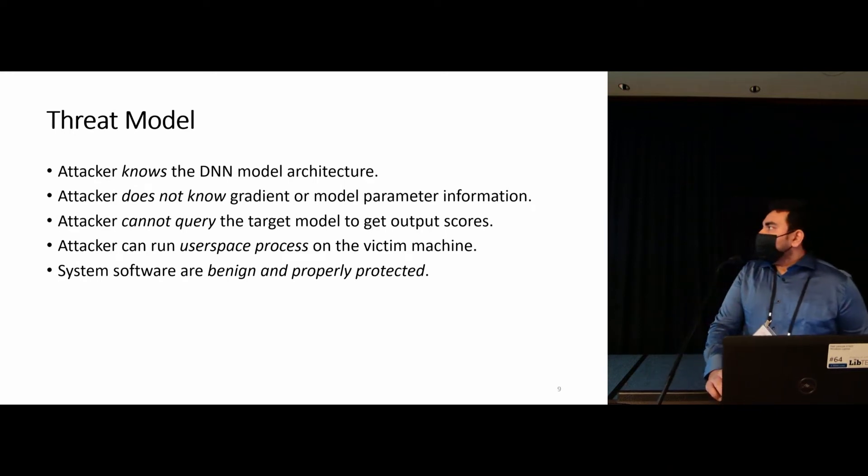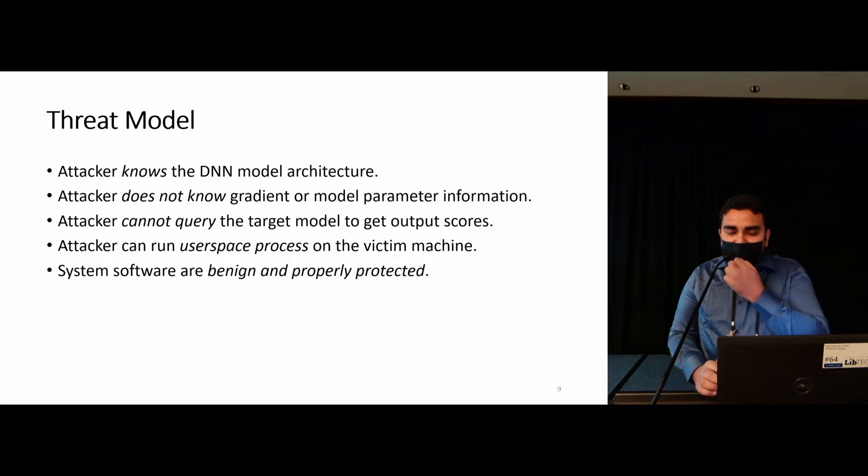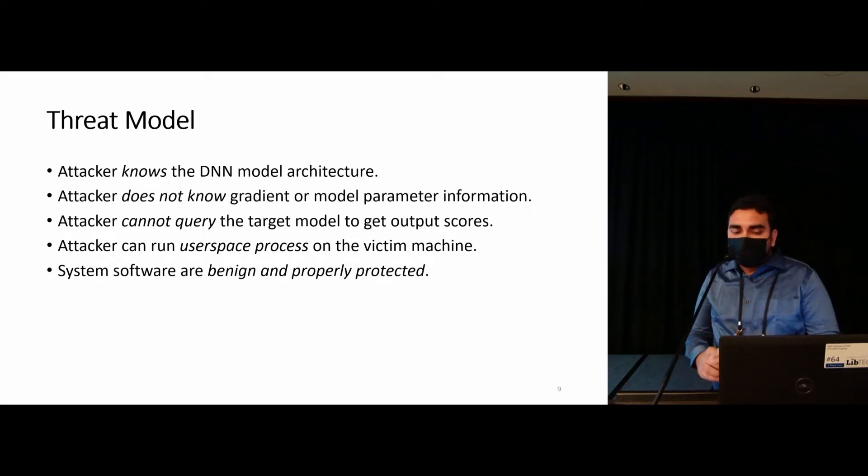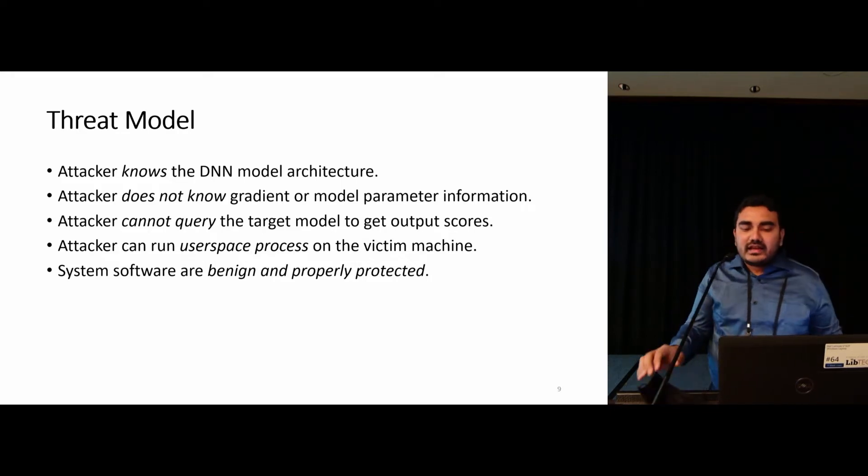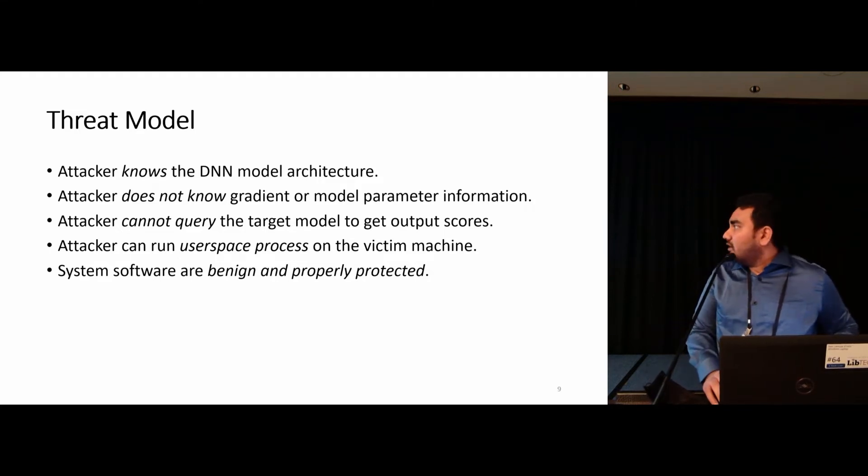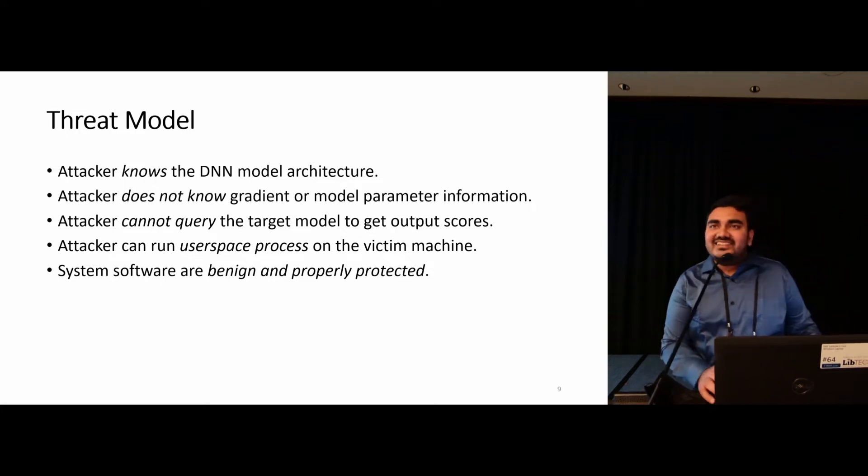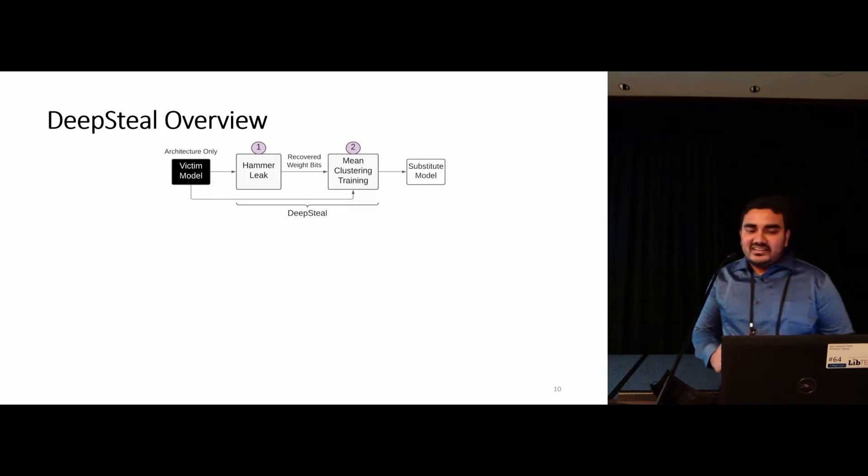Thank you, Adnan, for the great introduction. Before moving forward, let me first briefly discuss about our threat model and the scope of the attack. We assume the case where the victim is running inference using a DNN model in the same machine as the attacker. This is the typical case for remote environment, where multiple tenants actually share the same physical hardware resources. We also assume the case that the attacker knows the victim DNN model architecture. However, the attacker does not know any other information, such as model parameter information, and it cannot directly query the target model.